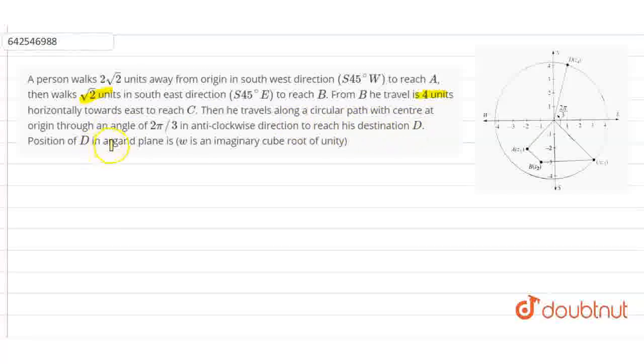Position of D in the argand plane is omega, which is an imaginary cube root of unity.